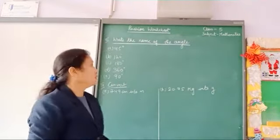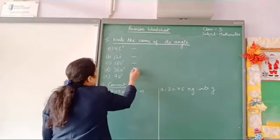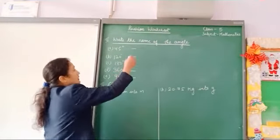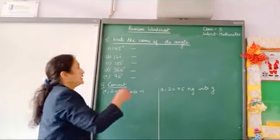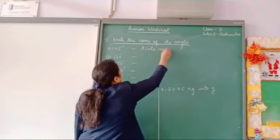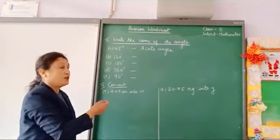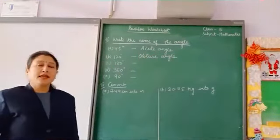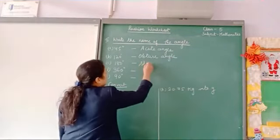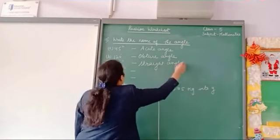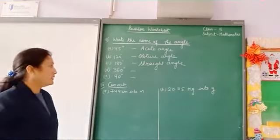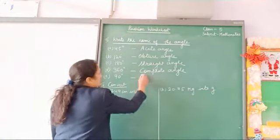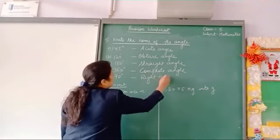In question number 3 we have to write down the names of these angles. So 45 degrees — 45 degrees is less than 90 degrees, and angles less than 90 degrees are called acute angles. 120 degrees is an obtuse angle. 180 degrees is a straight angle. 360 degrees is a complete angle. And 90 degrees is a right angle. This is our question number 3.